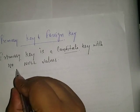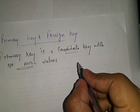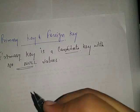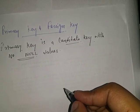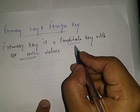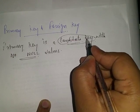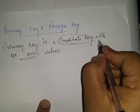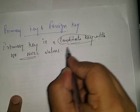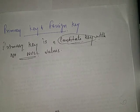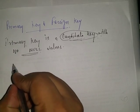A candidate key is any key with the help of which we are able to uniquely identify a record of a table. That means we are able to uniquely identify a record of the table with the help of a candidate key, and that candidate key should not have any null values in it — meaning the records of that particular candidate key should not be void or empty.